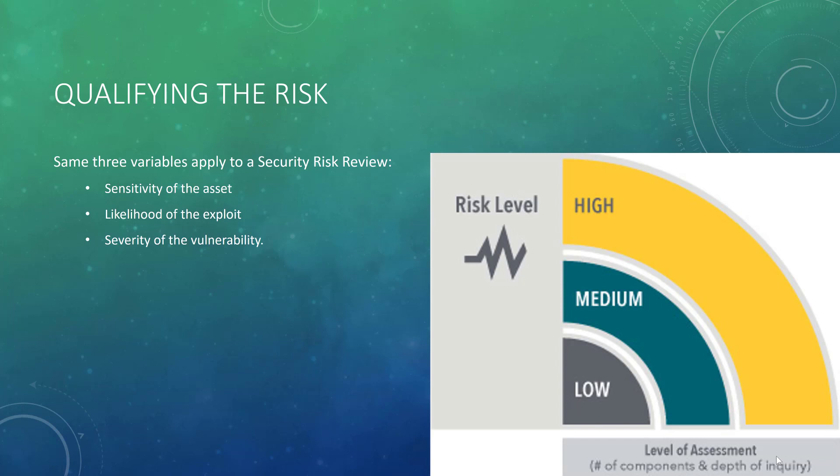You're going to use the same variables we've used all along: sensitivity, likelihood, and severity — although occasionally we call severity 'impact.' That brings us to the end of this introductory video looking at Chapter 12 of Wheeler's Most Excellent Textbook, Security Risk Management. In the next video, we're going to pick this up and start looking at workflows associated with the security risk review. So keep on studying, keep on learning, and I look forward to seeing you in the next video.